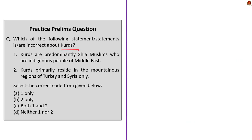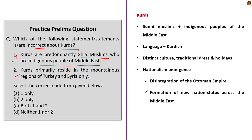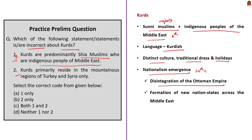The next question gives statements about the Kurds and asks which is incorrect. Statement 1 says Kurds are predominantly Shia Muslims who are indigenous people of the Middle East — this is incorrect. Kurds are primarily Sunni Muslims, though they adhere to different religions; the majority are Sunni. The second part — that Kurds are indigenous people of the Middle East and the region's fourth largest ethnic group — is correct. They speak Kurdish, an Indo-European language, and have distinct culture, traditional dress and holidays. Kurdish nationalism emerged during the 20th century following the disintegration of the Ottoman Empire.